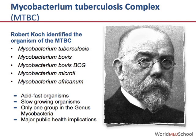The etiological agents of the disease tuberculosis are members of the Mycobacterium tuberculosis complex. The main organism within the complex is Mycobacterium tuberculosis, but other species, such as Mycobacterium bovis, Mycobacterium microti, Mycobacterium africanum, Mycobacterium canetti, and Mycobacterium pinnipedii are also responsible for causing TB disease.